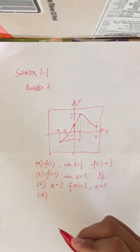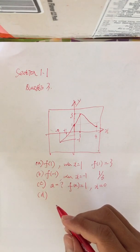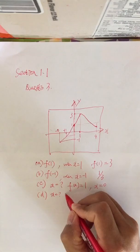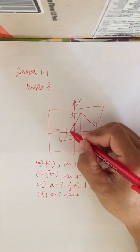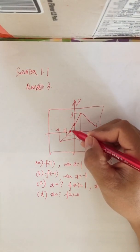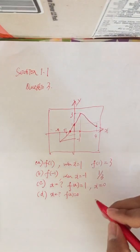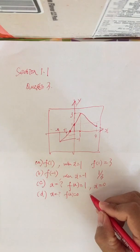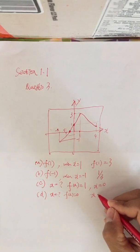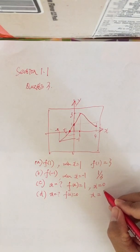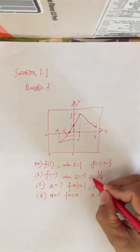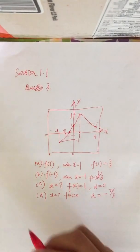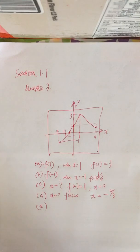Part (d): estimate the value of x when f(x) equals 0. f(x) equals 0 means this point. This point does not have an exact value for x, but we can estimate it's about x equals negative two-thirds.